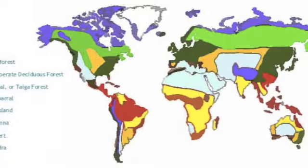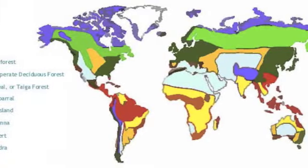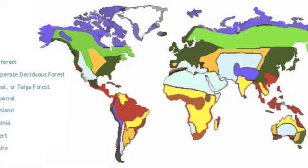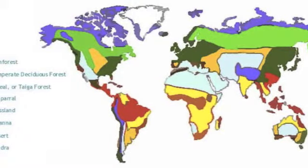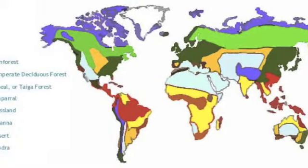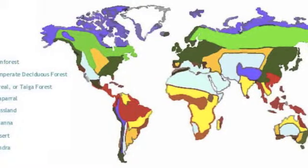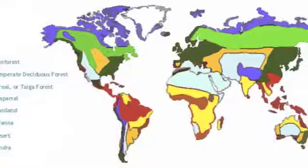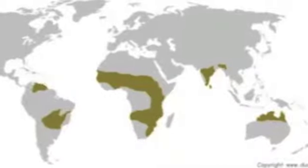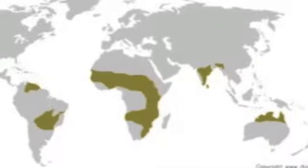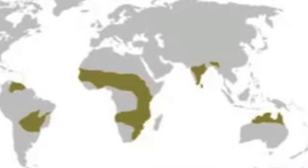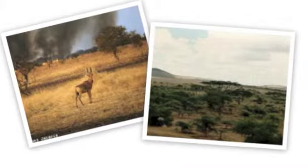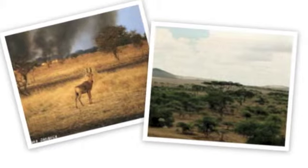The savanna biome is the largest biome in southern Africa, occupying 46% of its area and one-third of the area of South Africa. It also includes Australia. One interesting fact about the savanna is that it covers approximately 20% of the earth's land area.